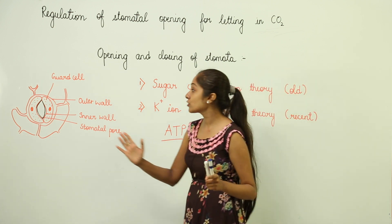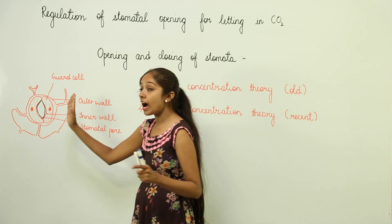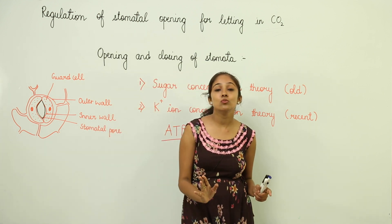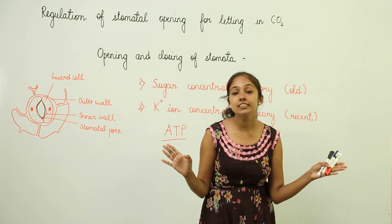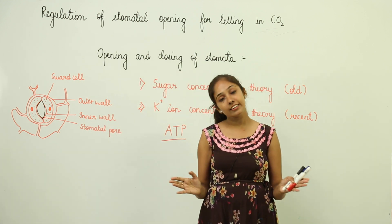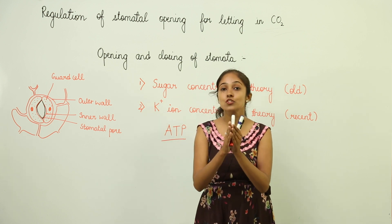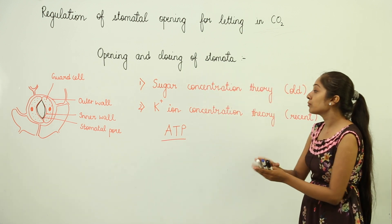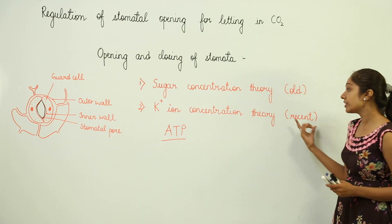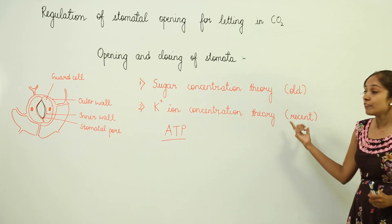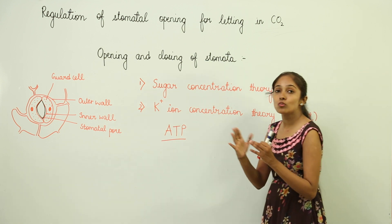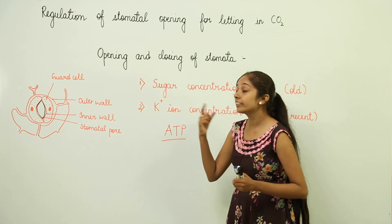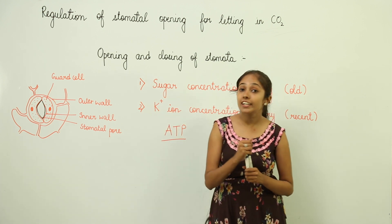The reverse happens during night: potassium ions go out of the guard cells, leading to the oozing out of water from the guard cells, and finally leading to the closing of the stomatal pore. This is what is conveyed by potassium ion concentration theory — that the opening and closing of stomata is controlled by the potassium ion gradient that develops.